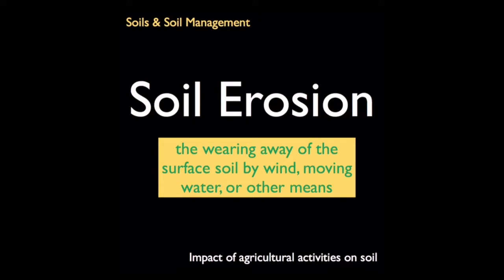From an agricultural perspective, erosion is the wearing away of the surface soil by wind, moving water, or other means. However, erosion is an intrinsic natural process that has a dramatic impact on the land.